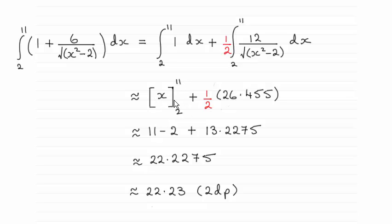So if you substitute those values in here, you get 11 minus 2 and then add it to half of 26.455.